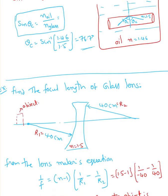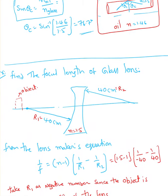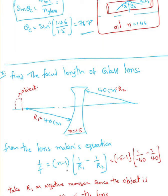The next example: find the focal length of a glass lens. The lens maker's equation is 1/f = (n − 1)(1/R1 − 1/R2), where n is the index of refraction of the glass — that value is 1.5.